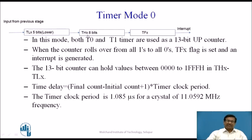TL and TH are the 16-bit timer registers. Mode 0 gives only 13-bit up-counting, since 8 plus 5 equals 13. The count goes into TLX; when TLX overflows, it goes to THX. When THX completely overflows, a TFX flag is generated, which in turn generates an interrupt. Both T0 and T1 are used as 13-bit up-counters. When the counter rolls over from all 1s to all 0s, TFX is set. The 13-bit counter can hold values between 0000H and 1FFFH in THX and TLX — this is the maximum value a 13-bit register can hold.